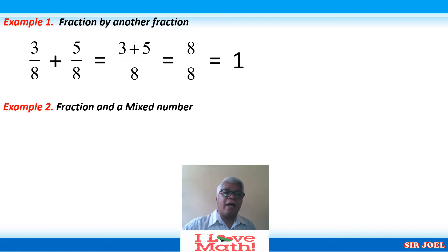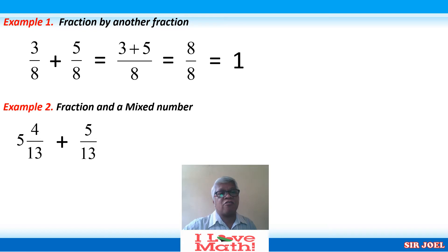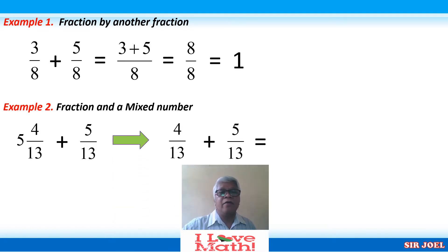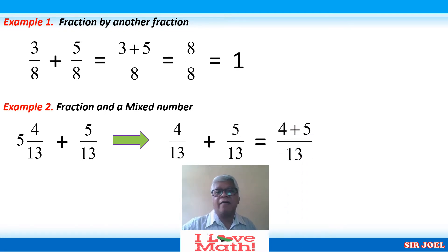Our next example is a fraction and a mixed number. How can we get the sum of these two? Let us find out. The given numbers are 5 over 13 and 5 and 4 over 13. Since the denominators are still the same, copy the denominator 13 once, then add 4 and 5. The sum is 9 over 13.